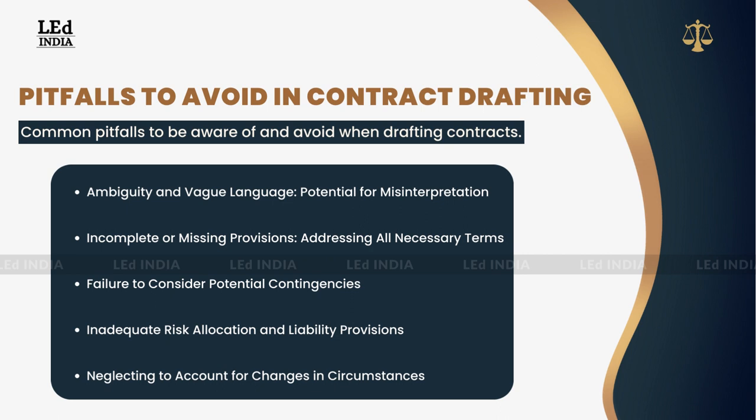Welcome to the chapter that will shed light on the common pitfalls to avoid in contract drafting. In this chapter, we will explore key considerations that will help you steer clear of potential pitfalls and ensure the effectiveness of your contracts. From avoiding ambiguity and vague language to addressing all necessary provisions and considering potential contingencies, we will cover it all. Let's dive in and uncover the pitfalls to avoid in contract drafting.